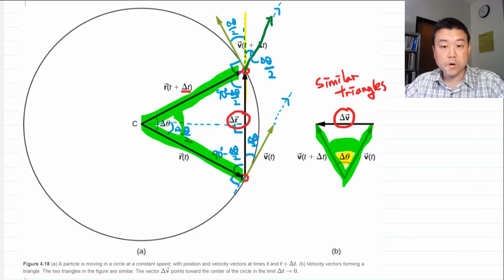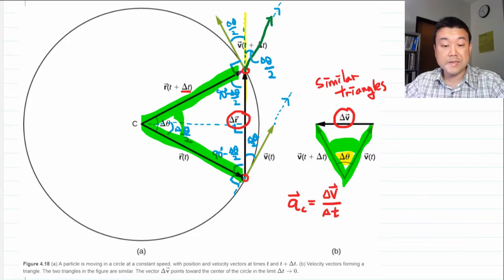And once you have an expression for delta V, then you can get the centripetal acceleration by saying that that's delta V divided by delta T. And of course, for instantaneous centripetal acceleration, we take the limit of delta T going to zero.